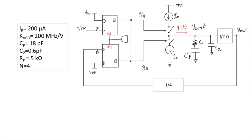Let us solve a problem on a Type 2 PLL. The given parameters are: IP = 200 µA, KVCO = 200 MHz/V, CP = 18 pF, C2 = 0.6 pF, RP = 5 kΩ, and a frequency divider where N = 4. This means the output frequency of Vout is 4 times higher than the input frequency.